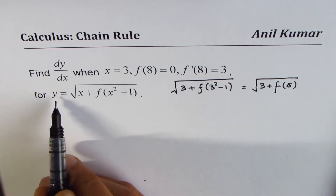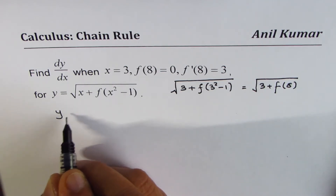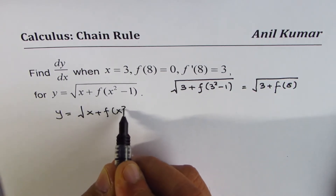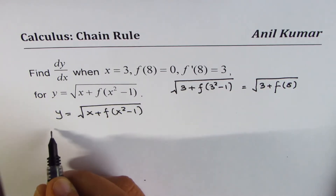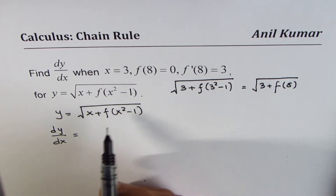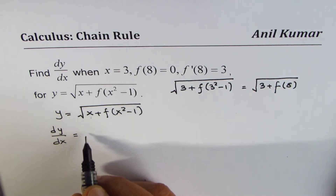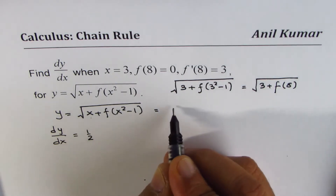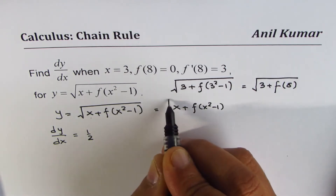We are given the function y equals the square root of x plus f(x² − 1). Let's rewrite this: y equals x plus f(x² − 1) to the power of one half. Now, taking the derivative with respect to x, we apply the chain rule: dy/dx equals one half times x plus f(x² − 1) to the power of one half.